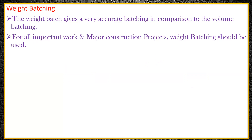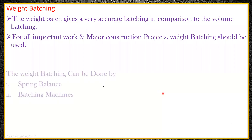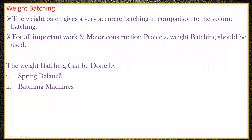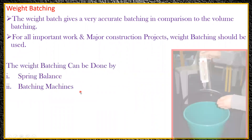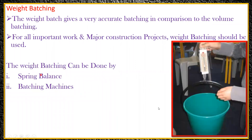Now coming to the types of weight batching. Weight batching can be done in two ways: one is by spring balance, and the second is by batching machines. The spring balance is what is called a spring balance.